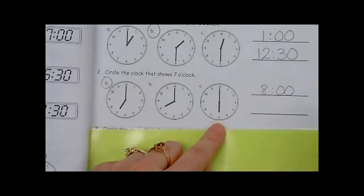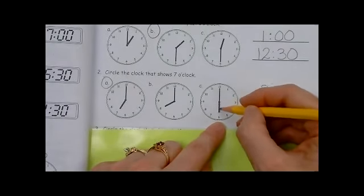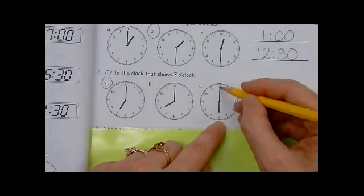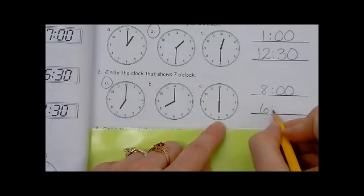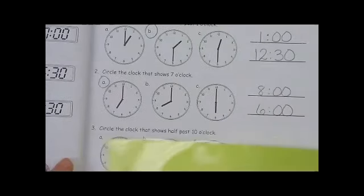What is C showing? Clock C, the hour hand is shorter. So, it's pointing at the six, to the six, and the minute hand's on the 12. So, it is six o'clock.